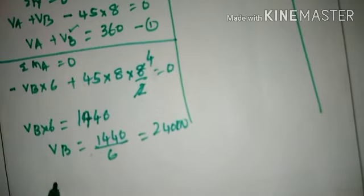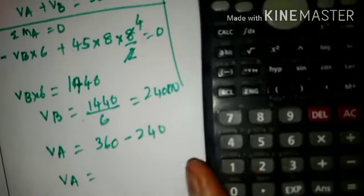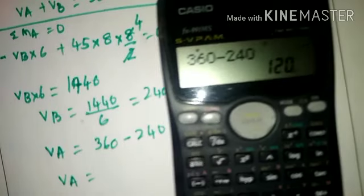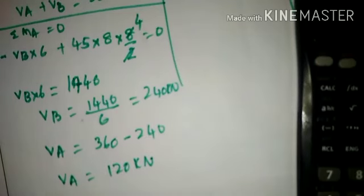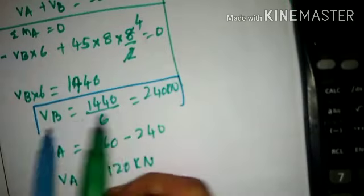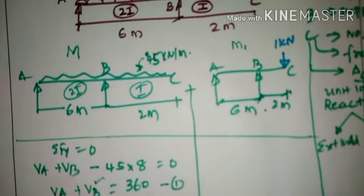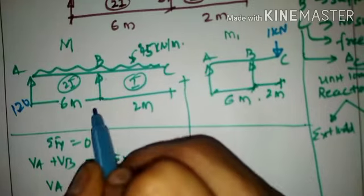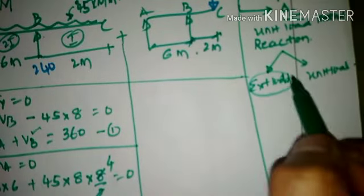Using equation 1: VA = 360 − 240 = 120 kN. So VA = 120 kN and VB = 240 kN. These are the reaction components due to the external load, which will be used to calculate the moment M.